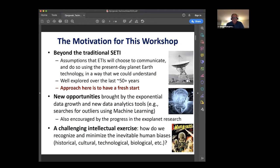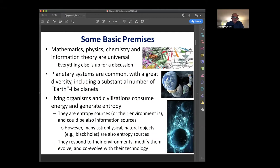And the reason why this was worth doing is that there are now many new opportunities, thanks to the growth to the big data, and also the tools to explore the big data, including machine learning, most of all. And of course, because of exoplanet research progress, now we know there are so many planets and Earth analogues out there. So this was really the challenge we put to ourselves. How can we recognize and minimize, if not eliminate, these inevitable human biases that are historical and cultural and technological, and so on and so forth.